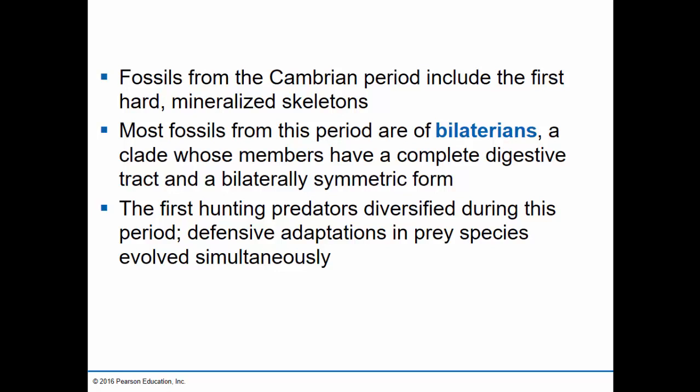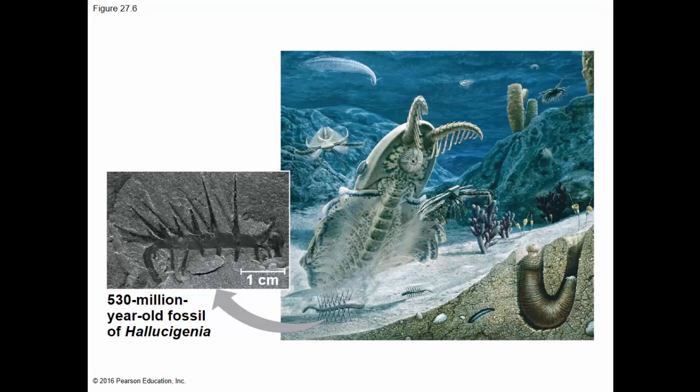During the Cambrian Explosion we also see the first hunting predators diversifying. The great amount of predation probably explains why so many defensive adaptations like exoskeletons and spines also evolved at this time — predatory selection pressure stimulated selection for these particular types of adaptations. The fossil of the 530 million year old Hallucigenia is a fairly simple organism but it has a head and a tail end that are different, making it a bilaterian.